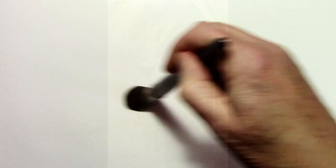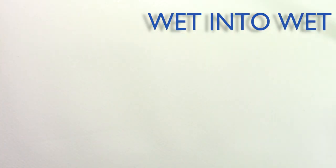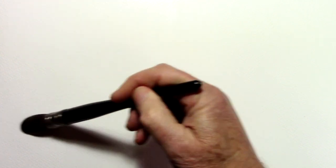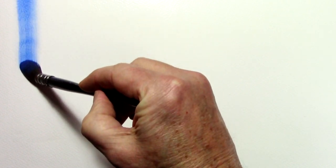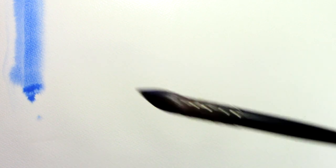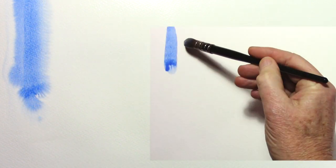The next brush technique is wet into wet and for this one I start by wetting the paper with clean water using my brush. This is a totally different effect as you'll see and again I am using this cobalt blue here. And when I make a brush stroke this time you can see there's no hard edges. It's very soft and just sort of blends in.